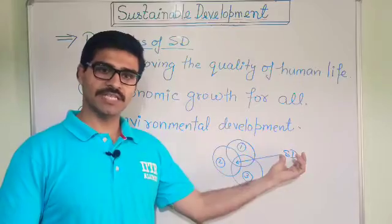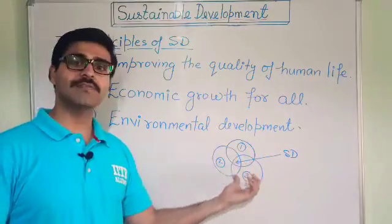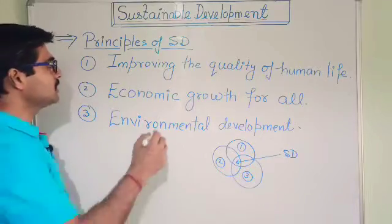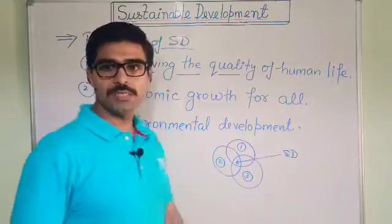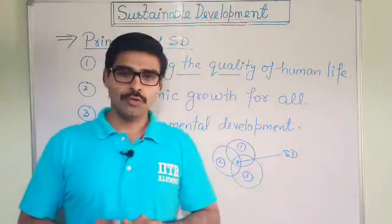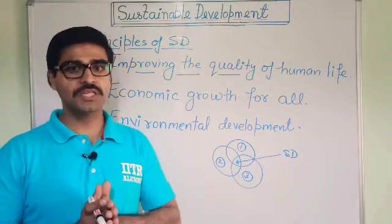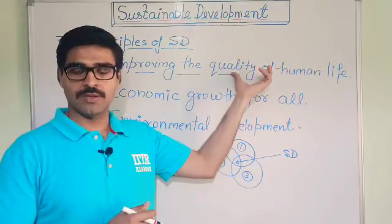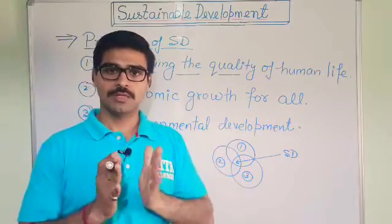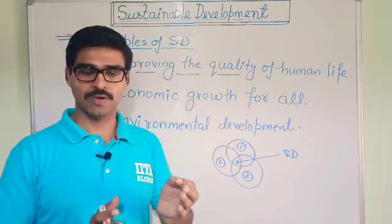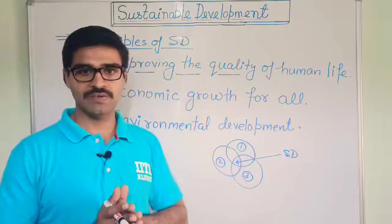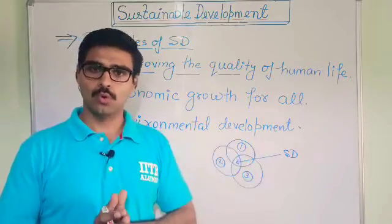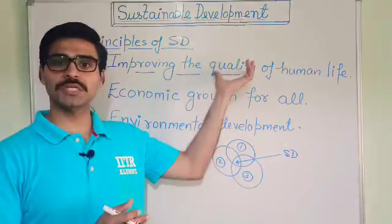There are three basic principles to achieve sustainable development. The first principle is: to improve the quality of human life while living within the carrying capacity of the ecosystem. The first objective is to improve the quality of human life — fulfilling the basic needs of humans such as food, fresh drinking water, medical facilities, and education. These basic facilities should be given to all by the governments. This is the first principle of sustainable development.